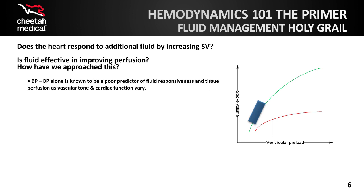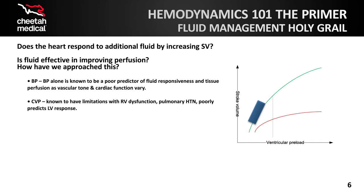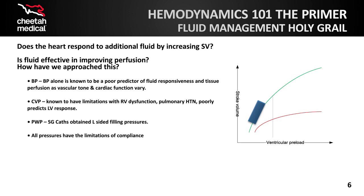Today, we know that blood pressure is a poor predictor of cardiac output and stroke volume. Central venous pressure, or CVP, was considered a step forward from blood pressure and has been monitored for years. However, as a preload measure, we've always known that CVP is a long way from the left ventricle, easily impacted by right ventricle problems or pulmonary abnormalities. In the 1970s, with the introduction of the Swann-Gans catheters, we began to also measure pulmonary wedge pressure as a proxy for left atrial pressure. Pressure measurements have very basic limitations when being used to assess volume, which we will return to.